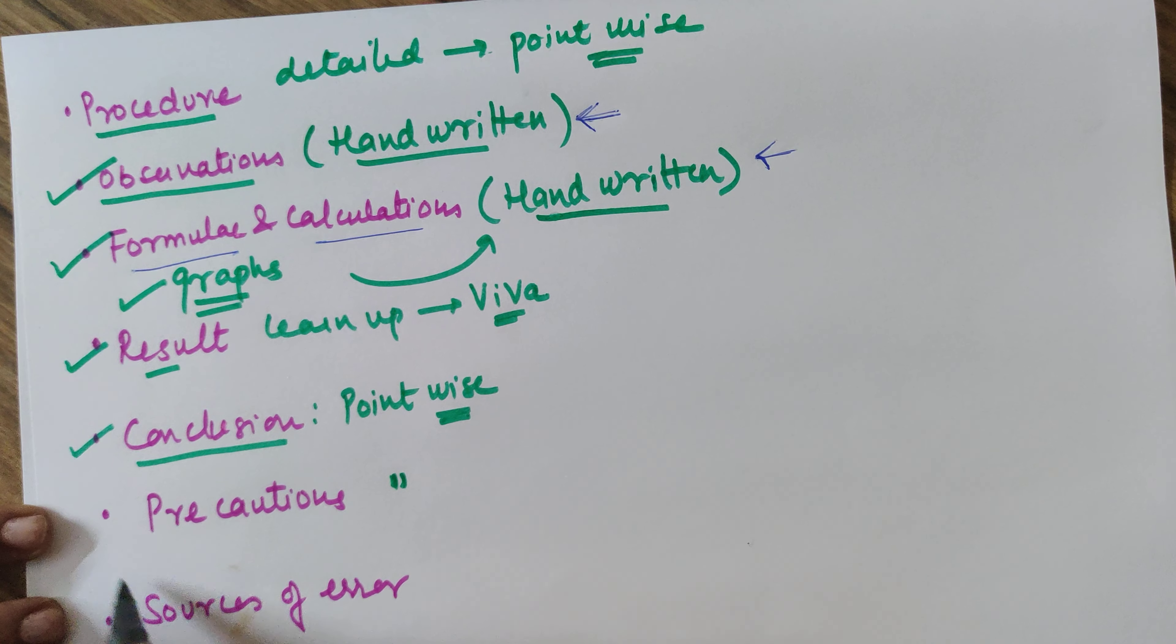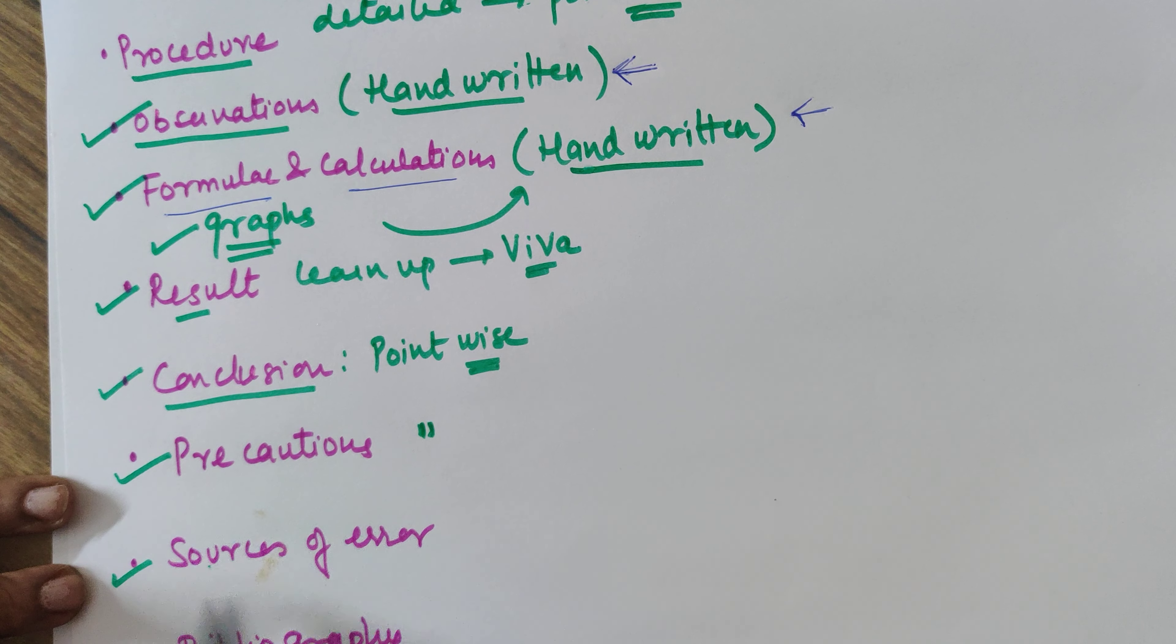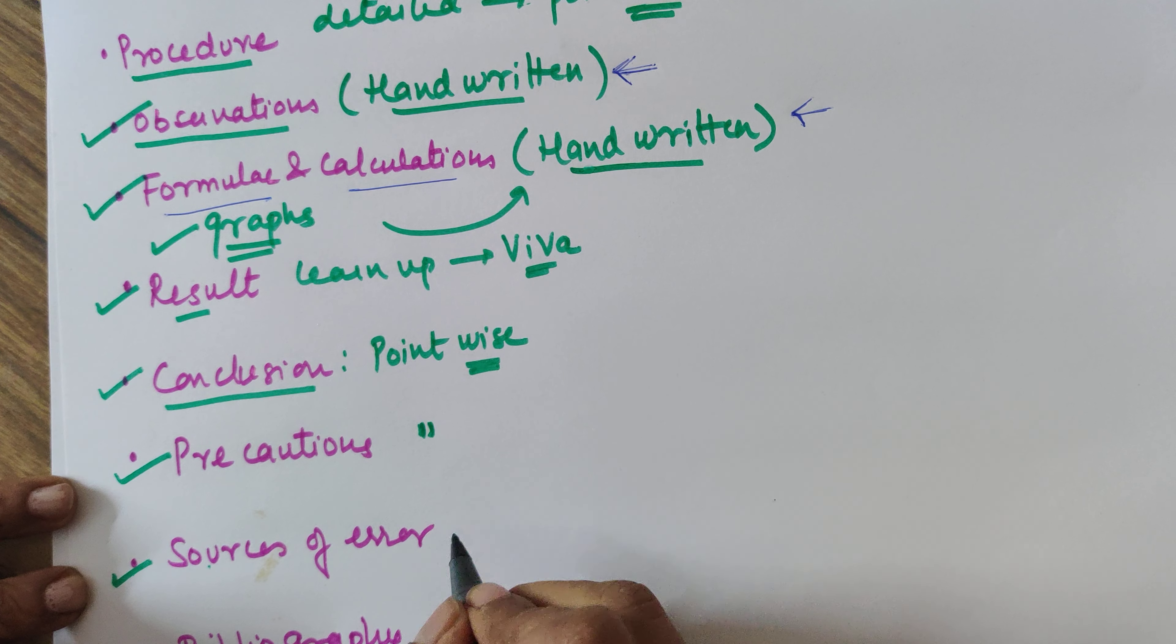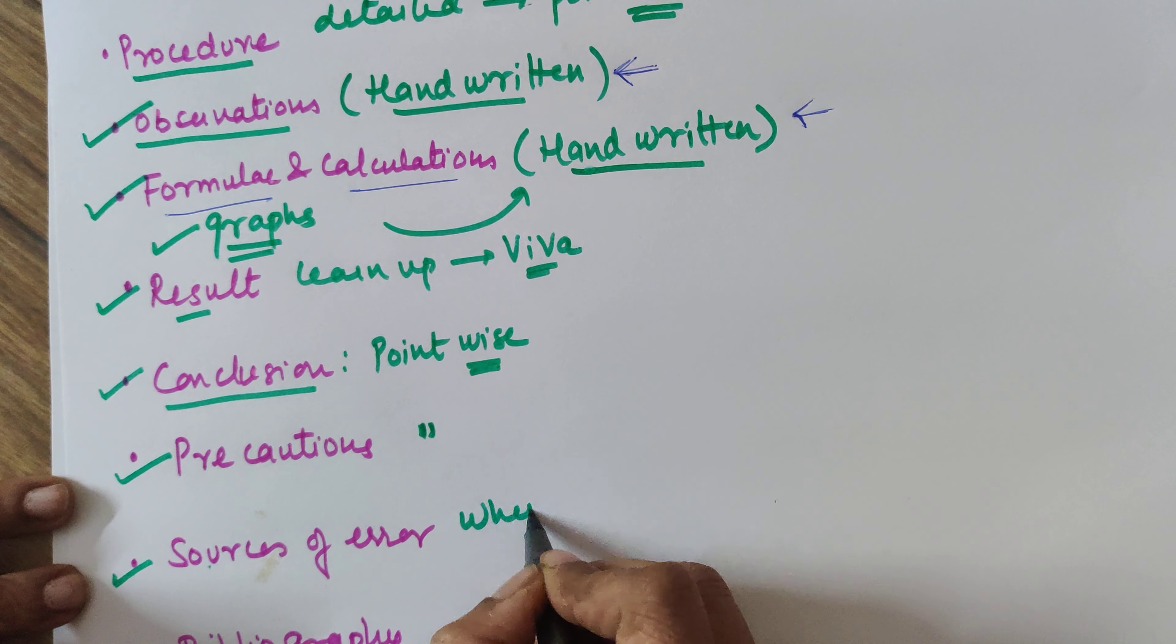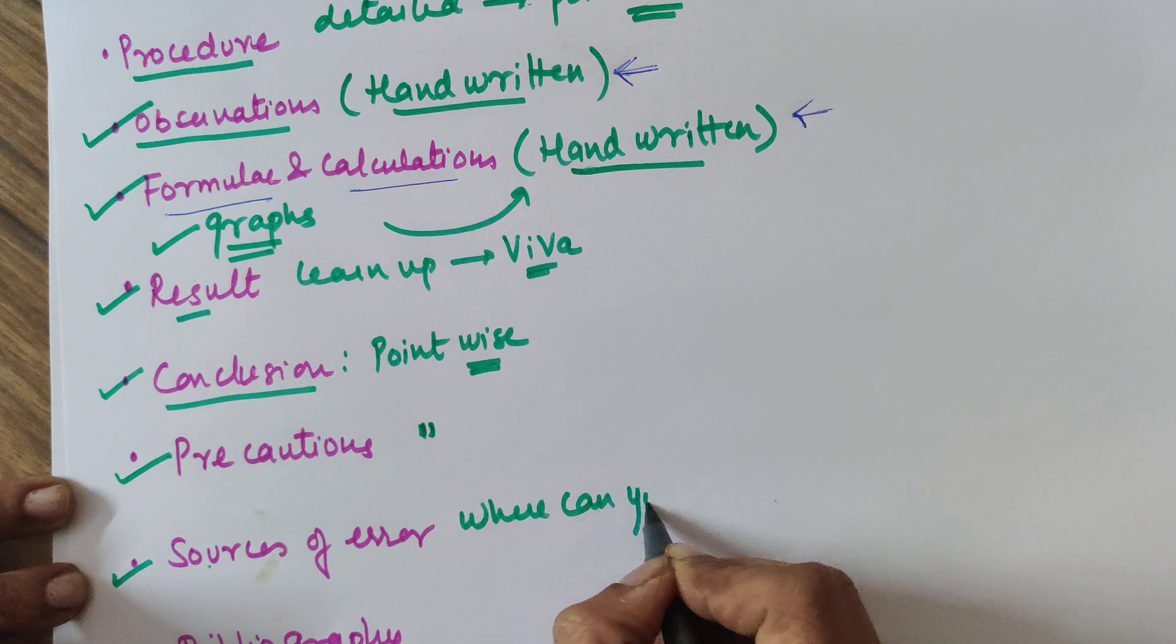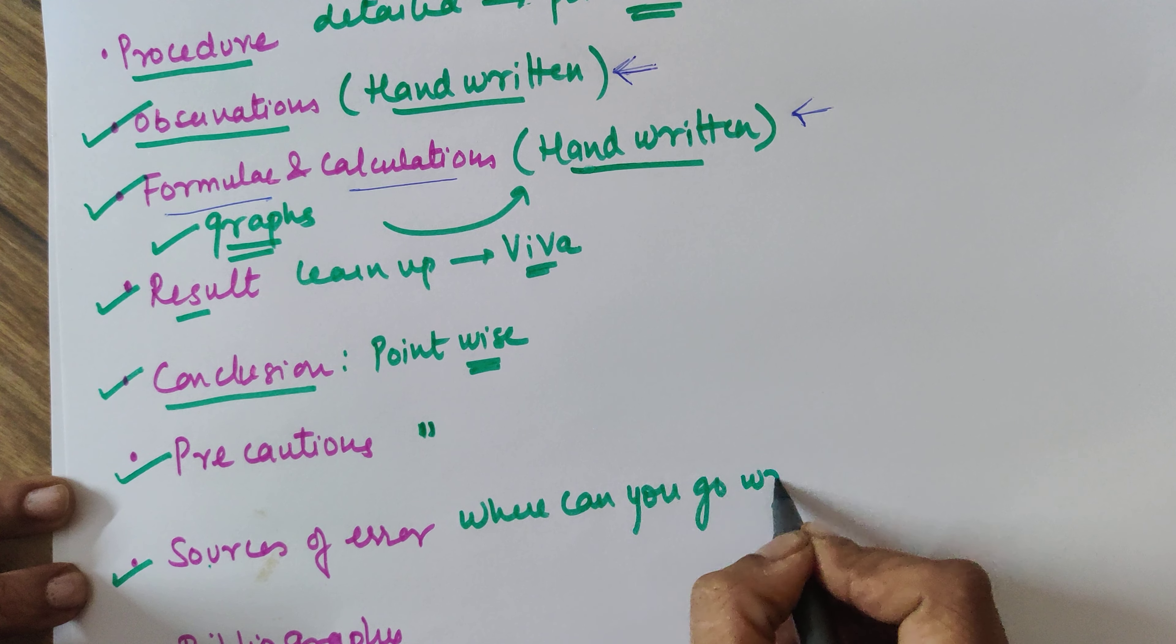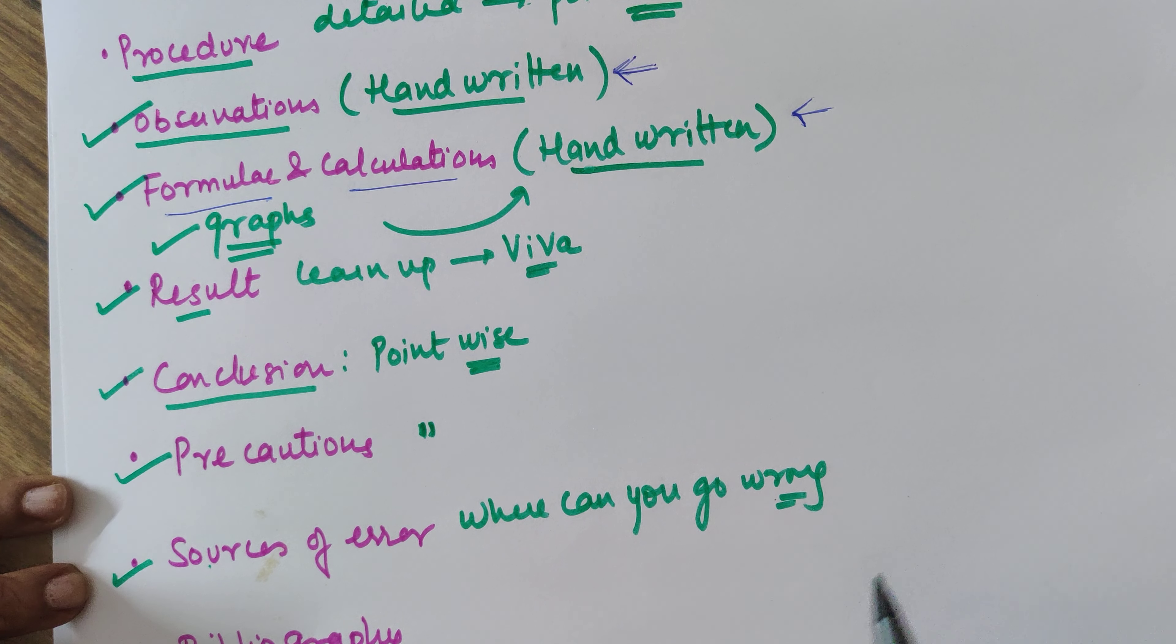Now there's a difference between precautions and sources of error. After precautions, the next page is for sources of error. Sources of error is where can you go wrong or where to be cautious - those are the things that are important and are called as the sources of error.